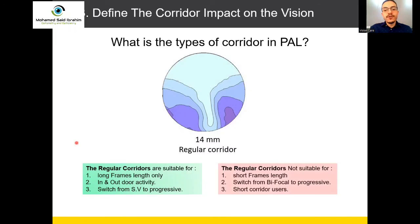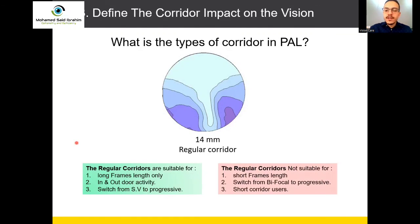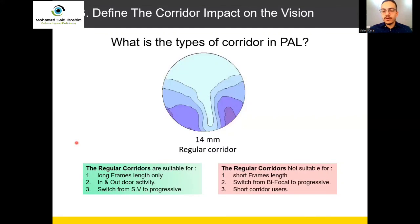Regular corridor is not suitable for short frames, because shorter frames need shorter corridors — you cannot fit regular corridor progressive lenses in a short frame. For people switching from bifocal to progressive, don't give them regular or longer corridor. And people who have already adapted to short corridor should not be given regular corridor lenses.